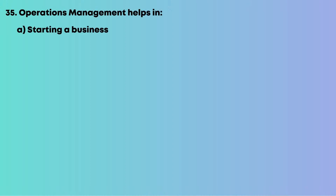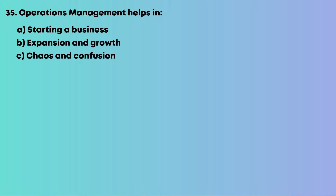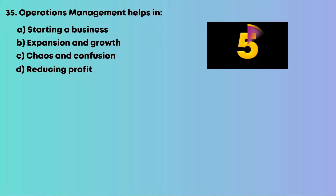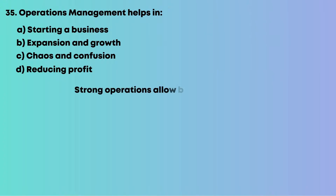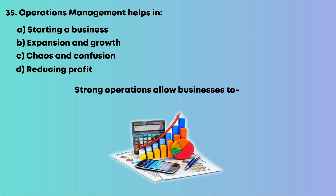Question 35: Operations management helps in: A, starting a business; B, expansion and growth; C, chaos and confusion; D, reducing profit. Strong operations allow businesses to scale effectively. The answer is B, expansion and growth.